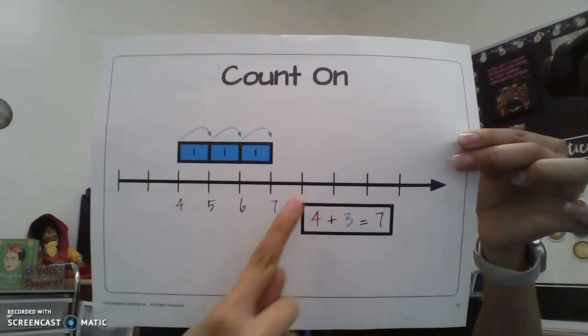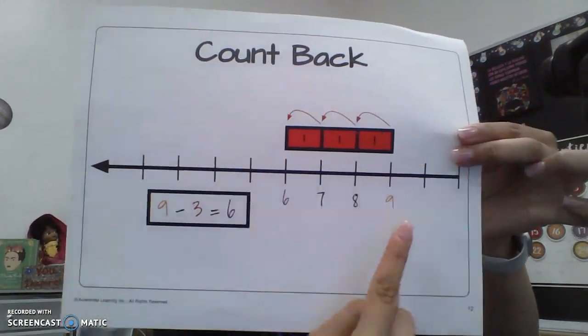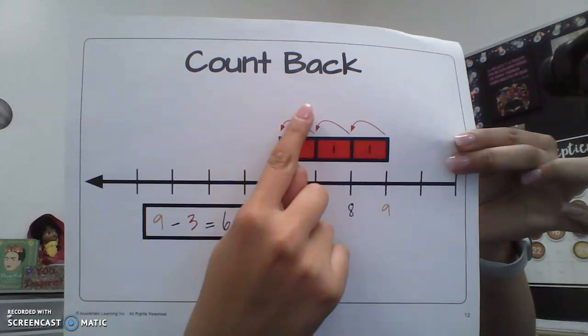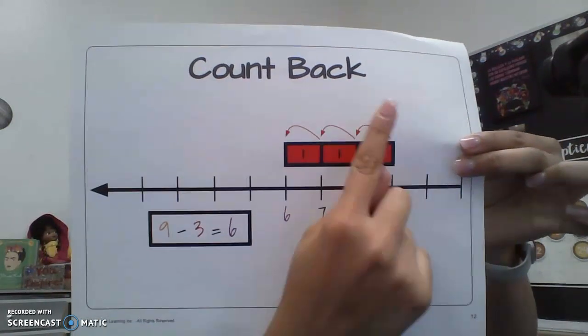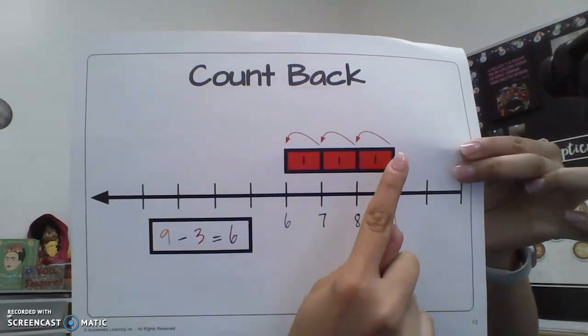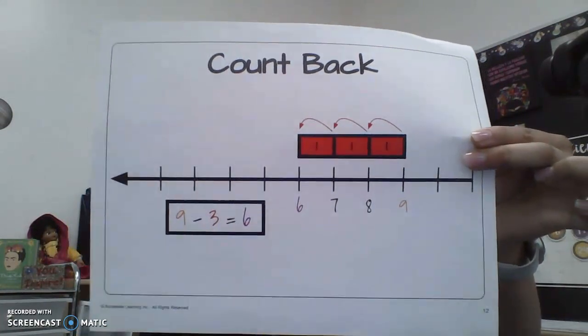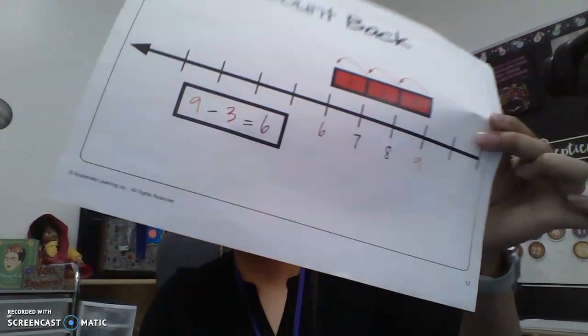We can also use the number line for subtraction. This vocabulary word is count back — we start on a number but count backwards instead of forward. We start at nine, put a subtraction sign, count backwards three times — one, two, three — and we land on six. So we are counting back.